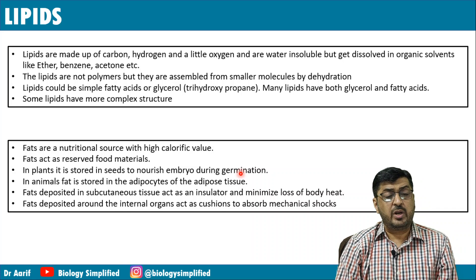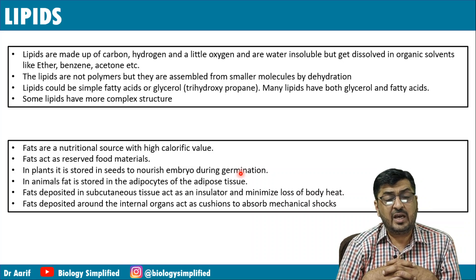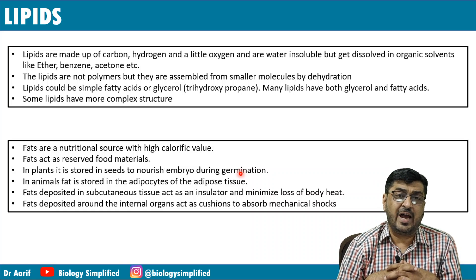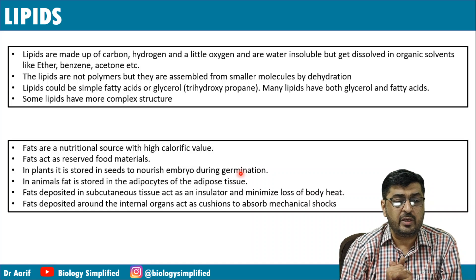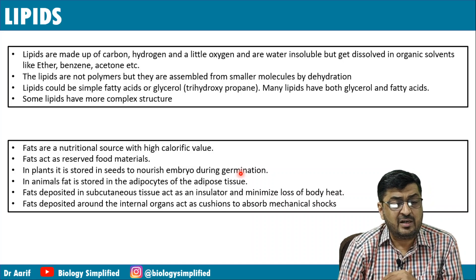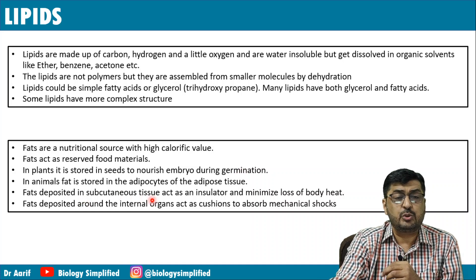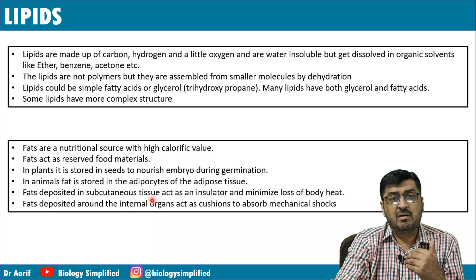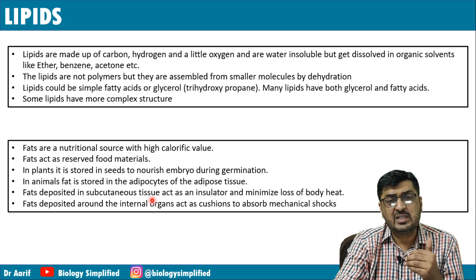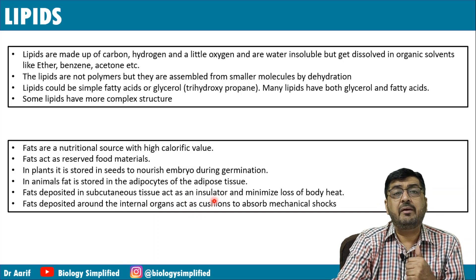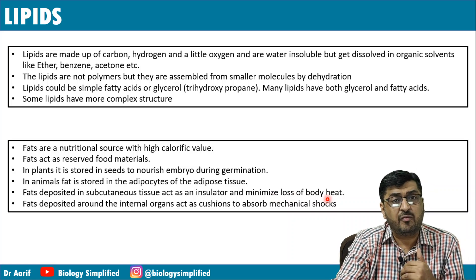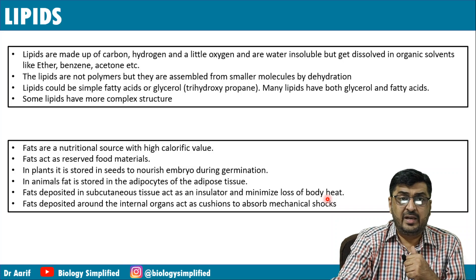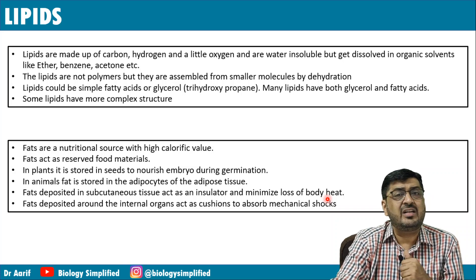In animals, fat is stored in the adipocytes of adipose tissue — a type of connective tissue. Fats deposited in subcutaneous tissue (below the skin) act as an insulator and minimize the loss of body heat, thereby helping maintain body temperature.